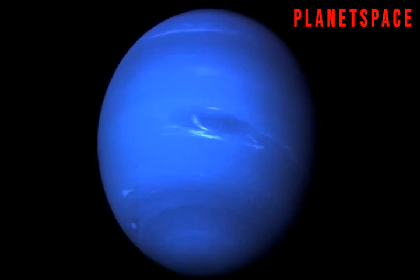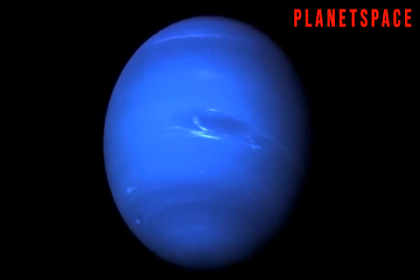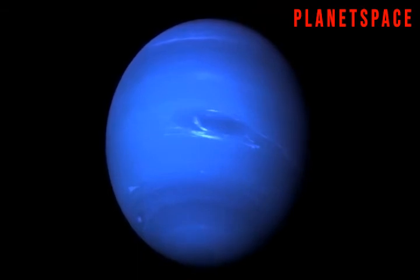The last time that Neptune was in the same place it is now was before the American Civil War, before computers, phones, airplanes, or cars had been invented. Neptune has the longest orbit of any planet in the solar system.